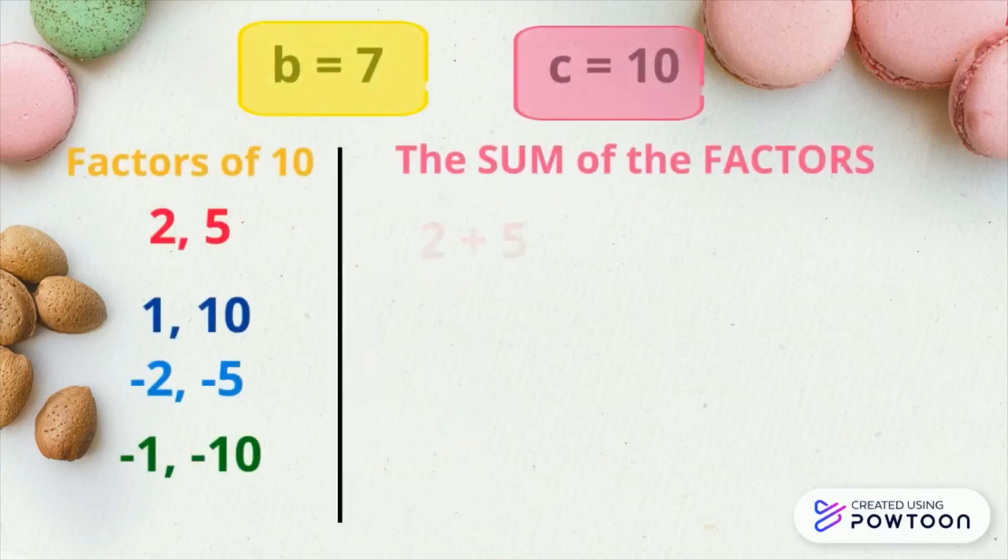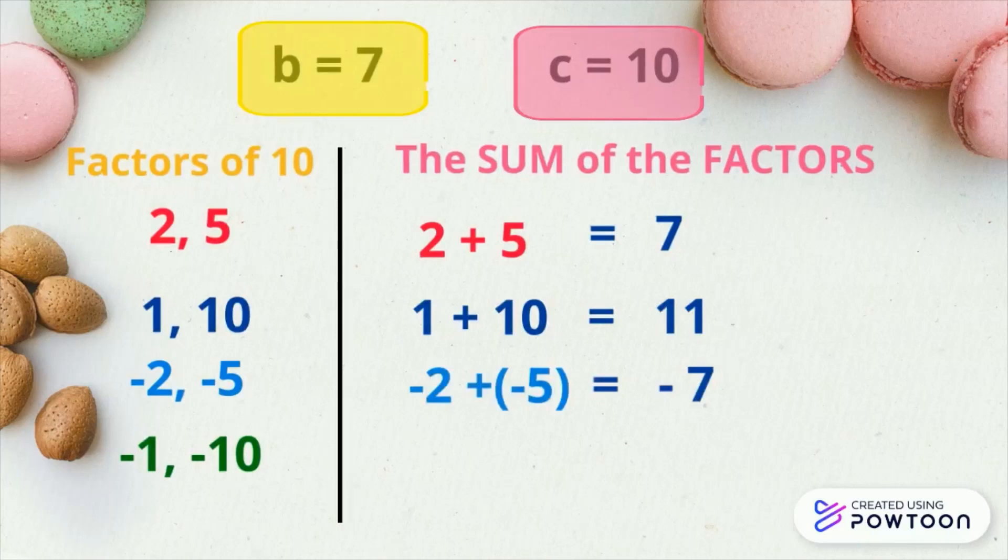Now, the sum of the factors. 2 and 5 is 7, 1 and 10 is 11, negative 2 and negative 5 is negative 7, negative 1 and negative 10 is negative 11. The factors 2 and 5 equals 7, which is equal to b.